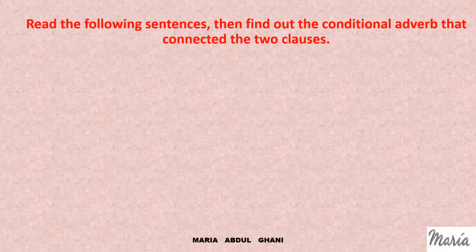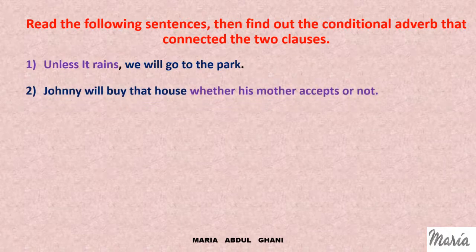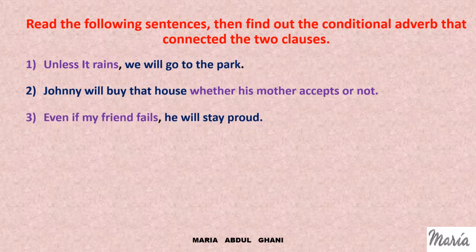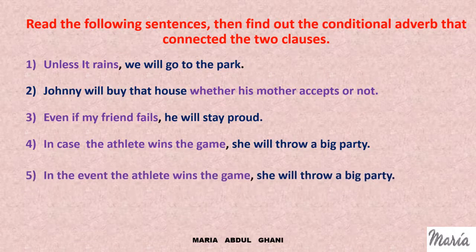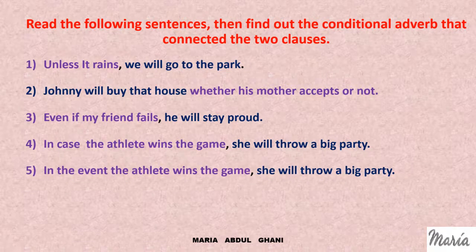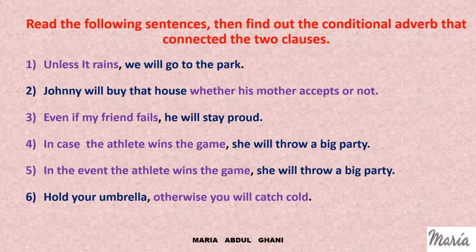One: 'Unless it rains, we will go to the park.' Two: 'Johnny will buy that house whether his mother accepts or not.' Three: 'Even if my friend fails, he will stay proud.' Four: 'In case the athlete wins the game, she will throw a big party.' Five: 'In the event the athlete wins the game, she will throw a big party.' Six: 'Hold your umbrella, otherwise you will catch cold.'